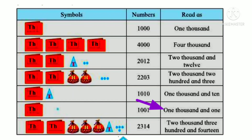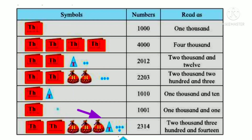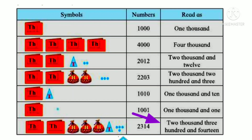Now see: two thousands are given, three hundreds are given, one ten is given, and four units are given. How to write this number? Like this — two thousand three hundred and fourteen. How to read it: two thousand three hundred and fourteen.